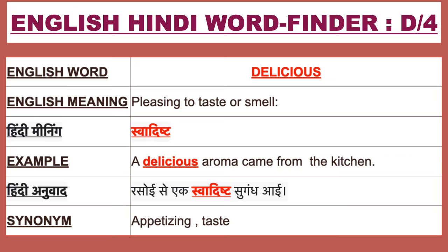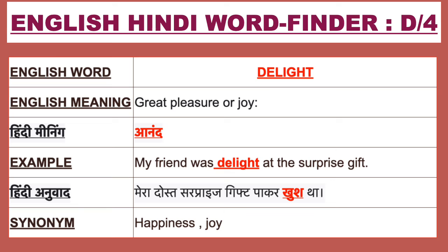Our next English word is Delicious. The English meaning of Delicious is pleasing to taste or smell. Delicious ka Hindi meaning hai swadisht. For example: A delicious aroma came from the kitchen. Ise Hindi mein bolenge: rasoi mein se ek swadisht sugandh aayi. Synonyms of Delicious are appetizing and tasty.